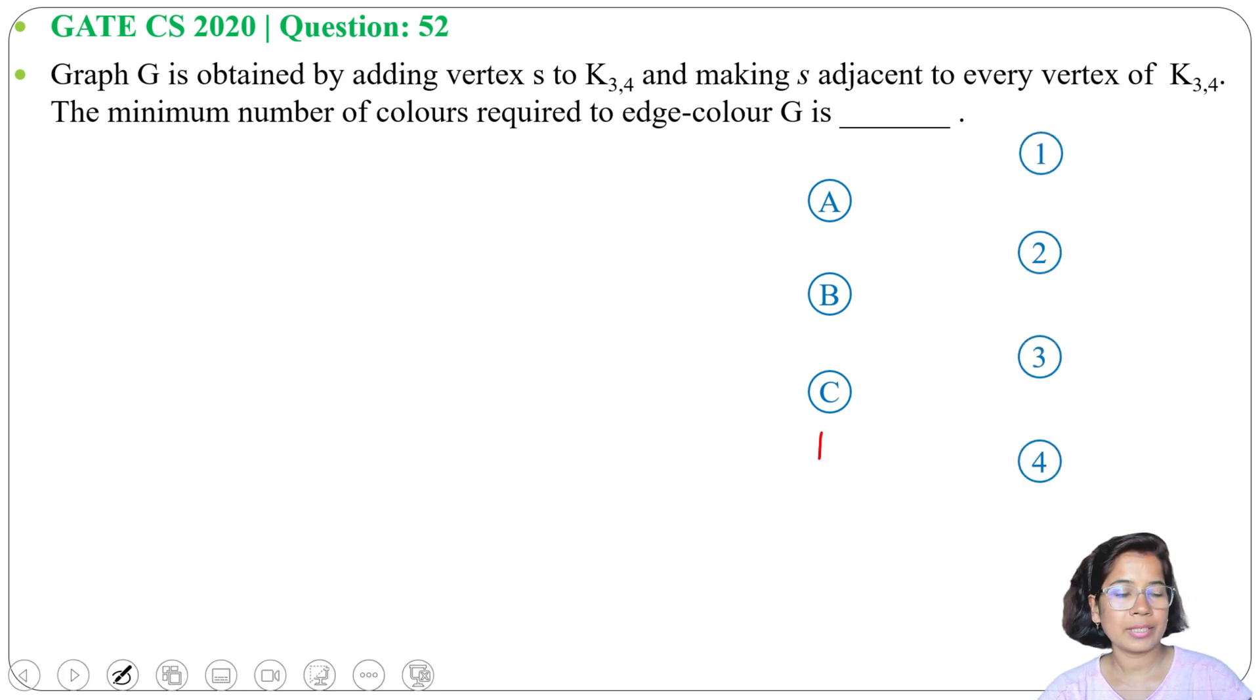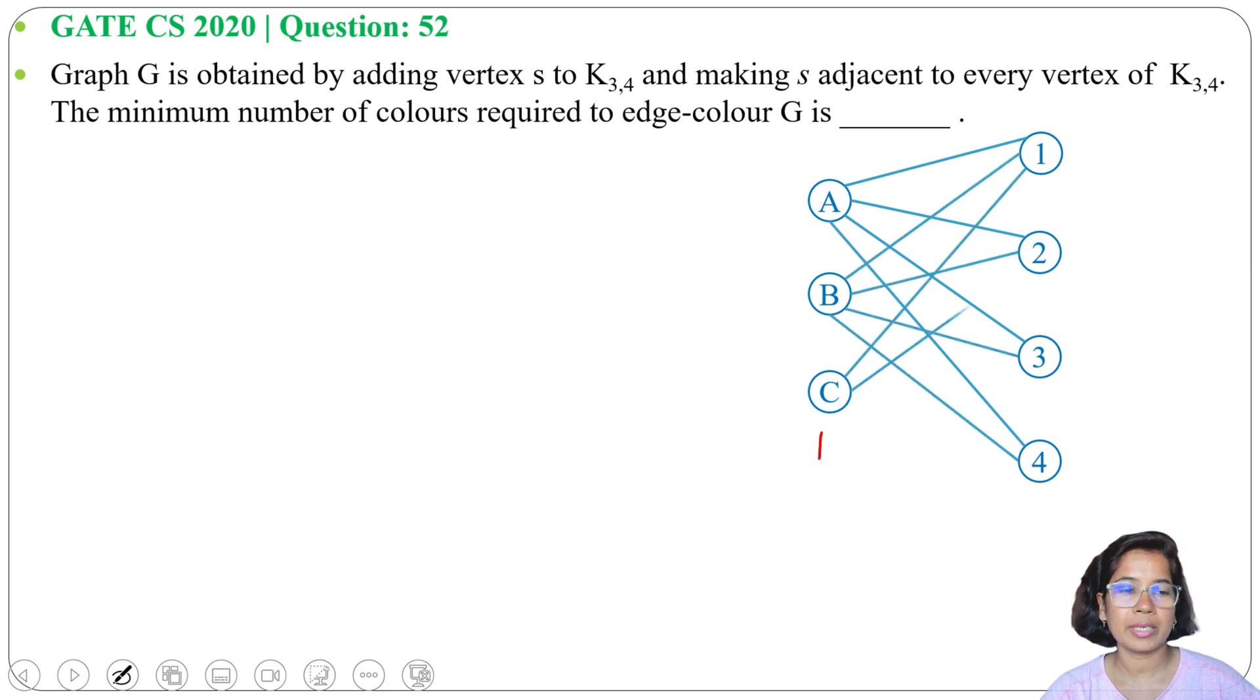In this graph, every vertex on one side will be adjacent to every vertex on the other side. So A will be adjacent to 1, 2, 3, 4. B will be adjacent to 1, 2, 3, 4. C will be adjacent to 1, 2, 3, 4. This is our K3,4.